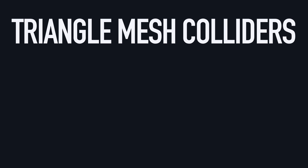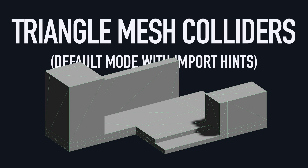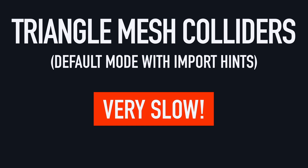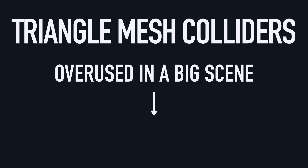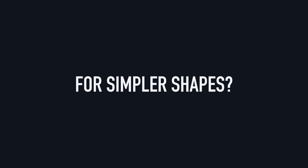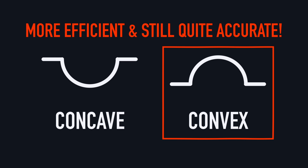Triangle mesh colliders are interesting because they are really accurate in terms of collisions, even on more complex meshes. For example, for a complex shape like a whole level layout, it would properly wrap up the entire complex surface. However, this accuracy comes at a price, and those colliders are also the slowest ones. Meaning that if you fill a big scene with only this type of colliders, you'll severely hinder your performance and decrease the frame rate. That's why for simpler objects, and in particular shapes that are not concave, it's better to use a convex collider. These are a bit more efficient and still pretty accurate, as long as you don't have any holes or creases in your geometry.